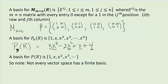A basis for the vector space of all polynomials is not finite — it is an infinite countable basis. A polynomial does stop; it's not like a series. You might have a 50th-degree polynomial, and it would be a linear combination of the first 50 vectors in that basis. So this is an example of an infinite-dimensional vector space.